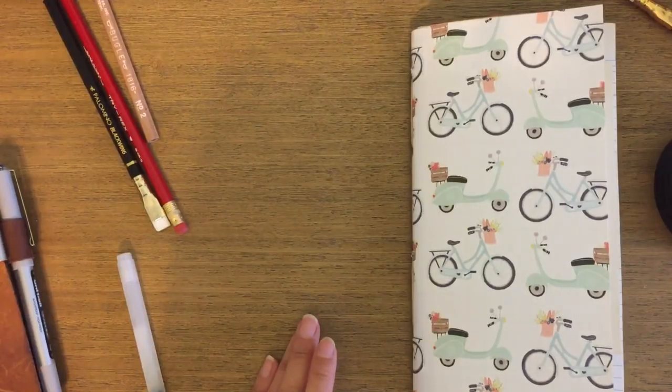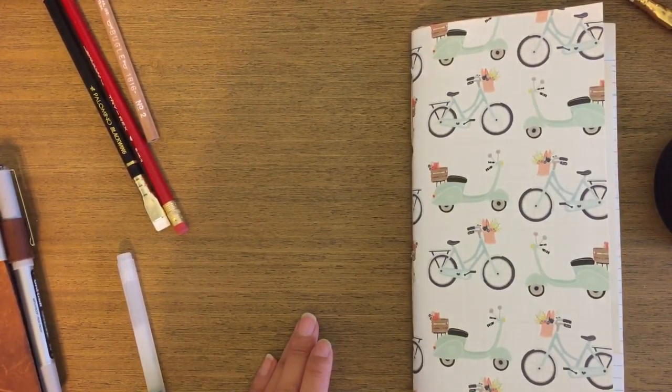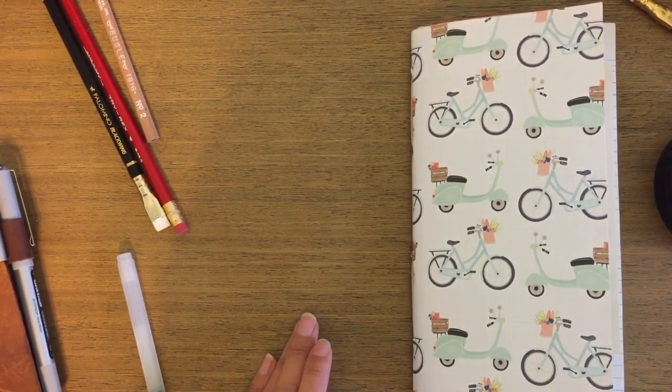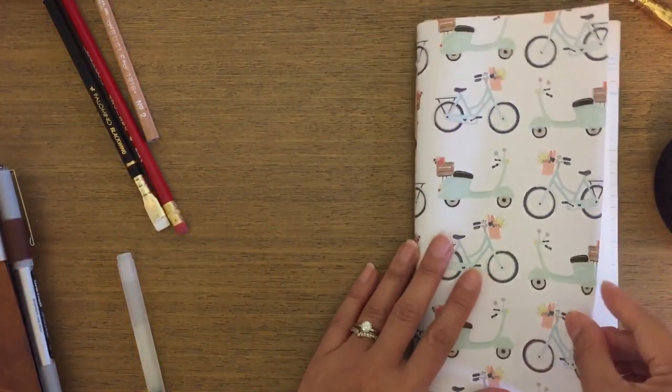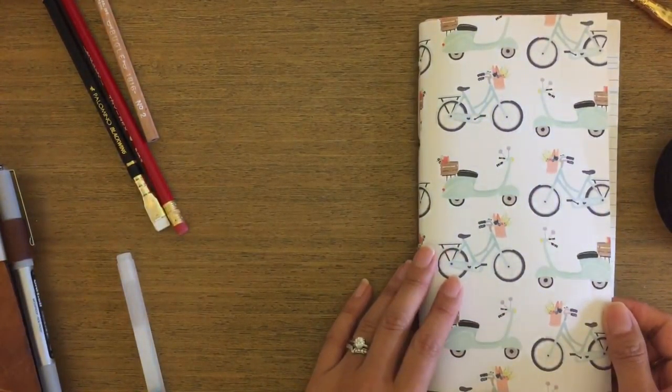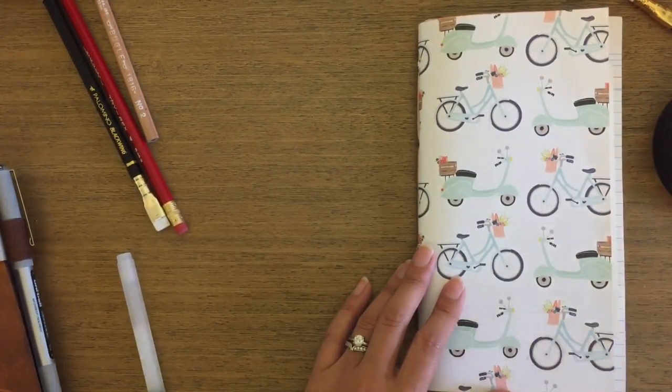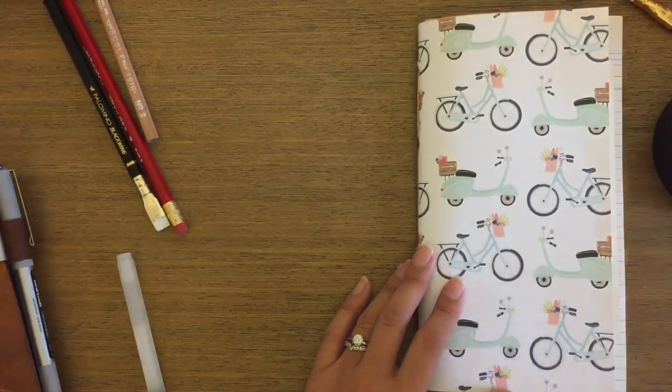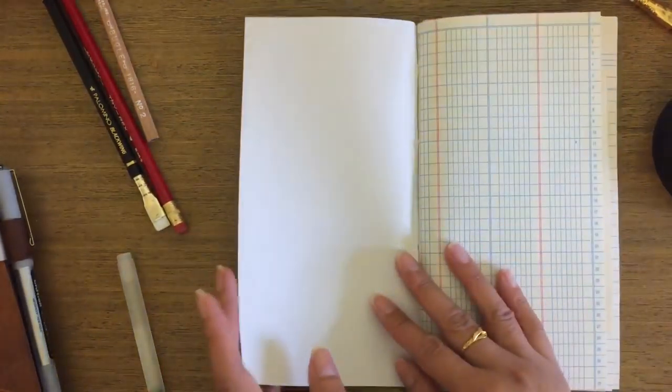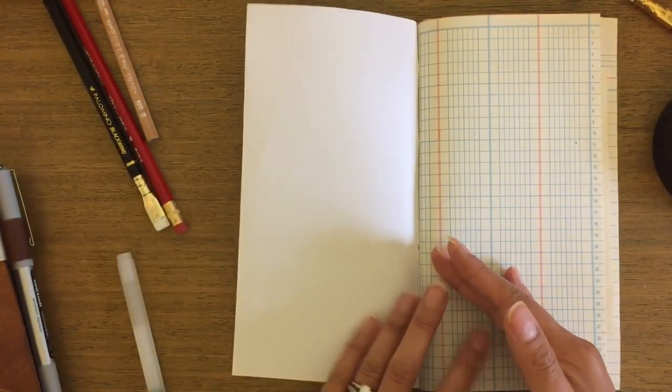I go back and forth. I want to have things for junk journals because I do like making them, but I'm also trying to use up stuff and I don't want to keep all those supplies around. I don't know, let me know if you guys struggle with the same thing because you want to do the hobbies but you don't want to have all the supplies.